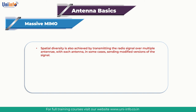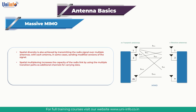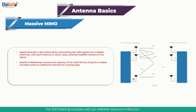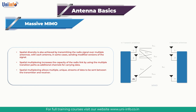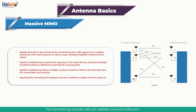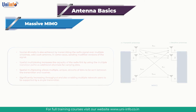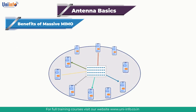While spatial diversity increases the reliability of the radio link, spatial multiplexing increases the capacity of the radio link by using multiple transmission paths as additional channels for carrying data. Spatial multiplexing allows multiple unique streams of data to be sent between the transmitter and receiver, significantly increasing throughput and enabling multiple network users to be supported by a single transmitter.